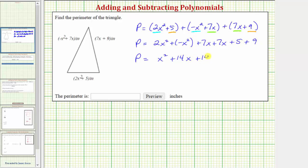And to make it clear the units are inches, let's put this quantity in parentheses, and then include the units of inches. So the quantity x squared plus 14 x plus 14 inches is the perimeter of the triangle. I hope you found this helpful.